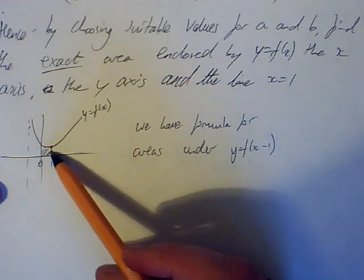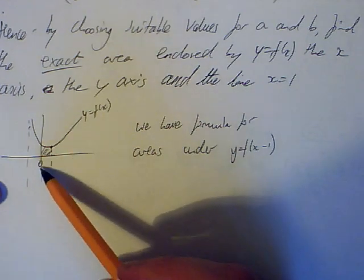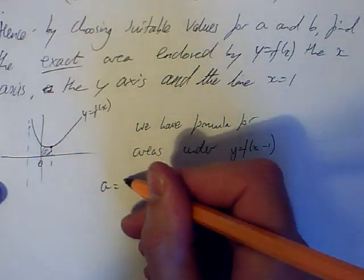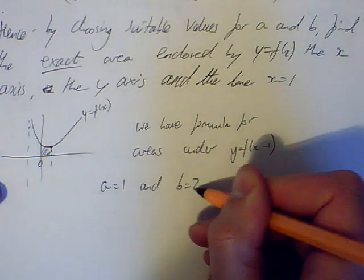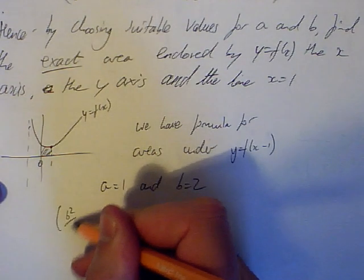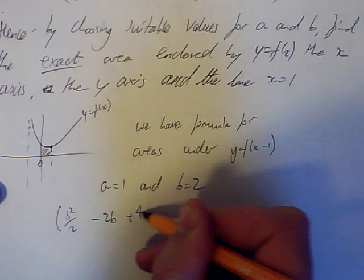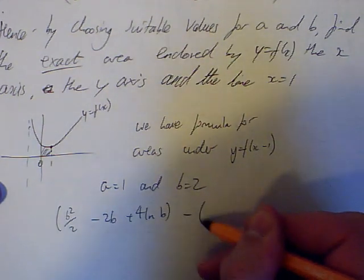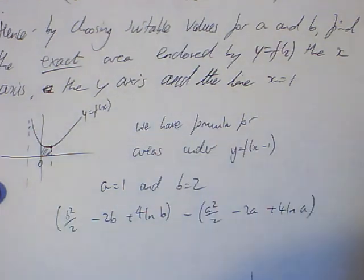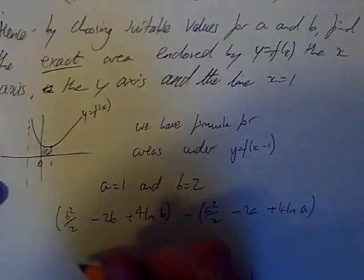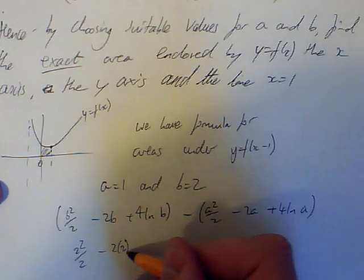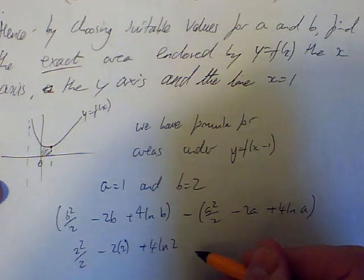So, we have, well, it's a formula, if you like, for areas under y equals f of x minus 1. And we can just put limits in there and work them out. Well, f of x minus 1 is a shift of f of x to the right by one unit. So, this whole thing here would get shifted along 1. So, hopefully, you can see the values of a and b that we need to put in aren't 0 and 1, but 1 and 2. a equals 1 and b equals 2. And there will be a mark, obviously, for realising that.